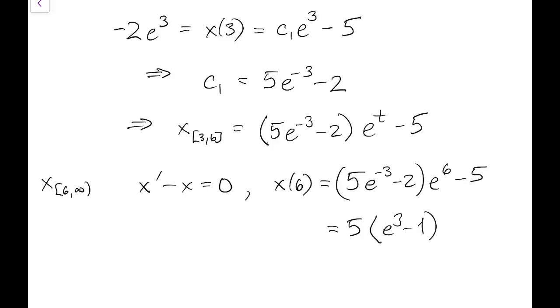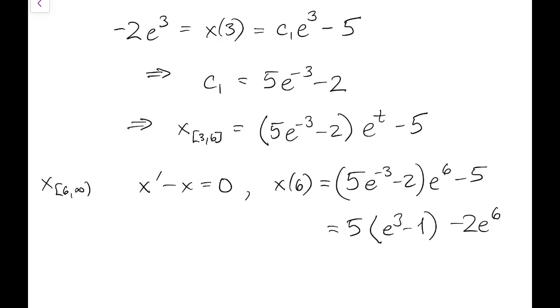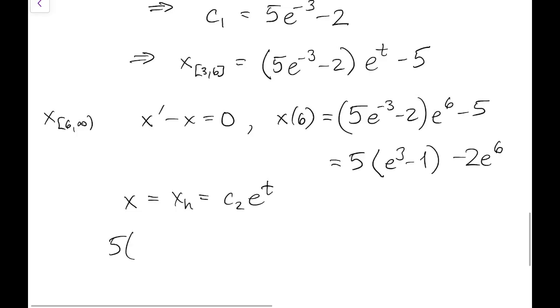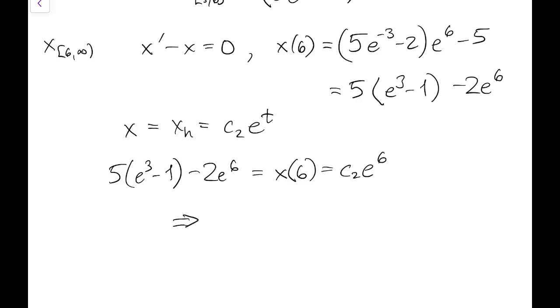So I'll rewrite that to make it slightly more convenient. Now the solution to this problem is homogeneous, so it's just constant times e to the t. All we have to do is use the initial value, which in this case is at time t equal to 6, and that helps us solve for this constant c2. So that helps us finalize the solution over this last piece.